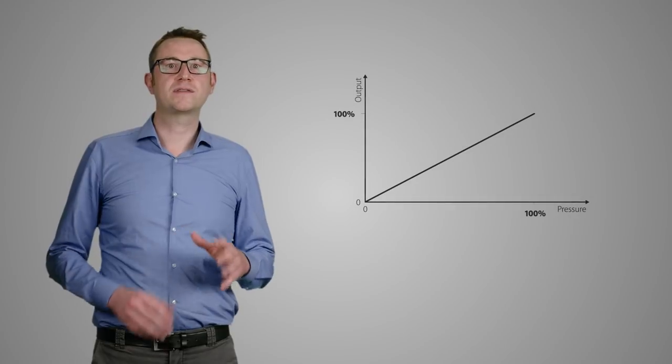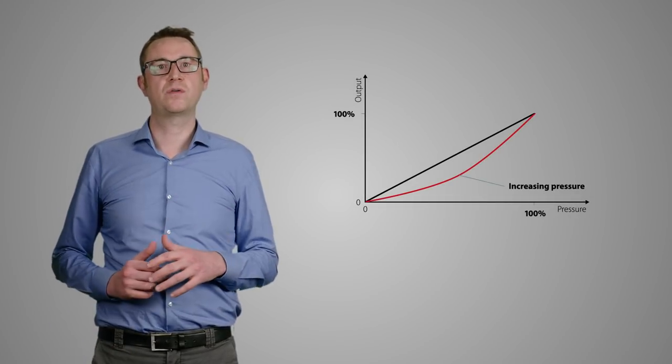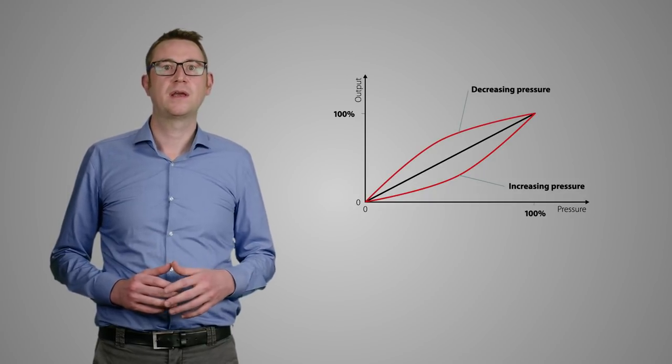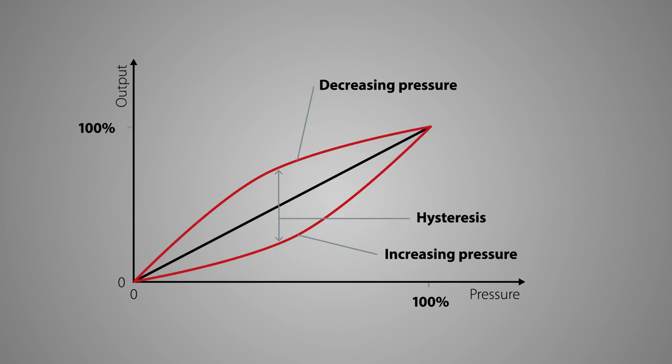The pressure hysteresis is also considered in the total error band. The increasing pressure is shown below, the decreasing pressure above the reference line. In the middle, you can see the hysteresis, which is the deviation between two measuring points taken in an increasing and decreasing pressure cycle at the same pressure value.